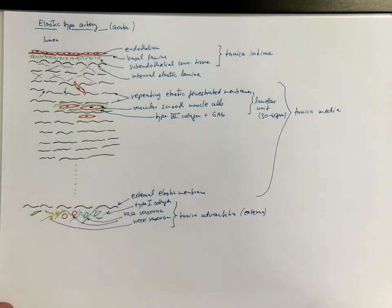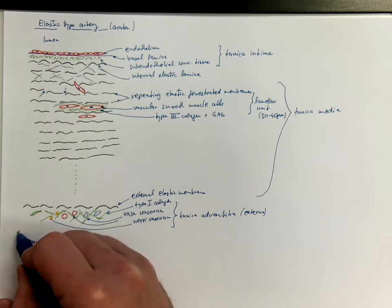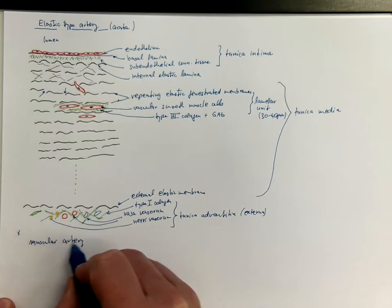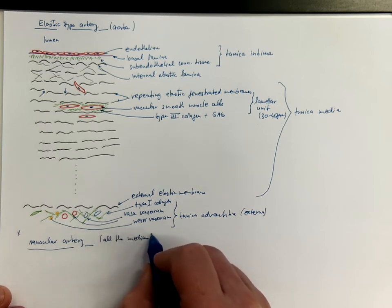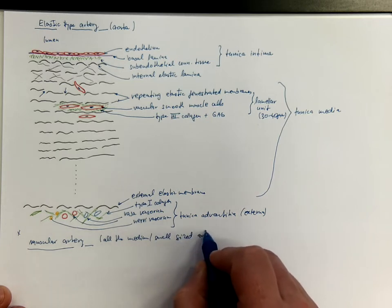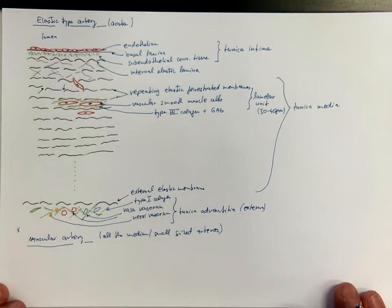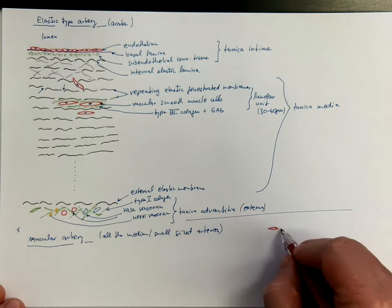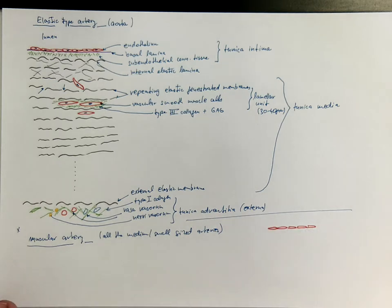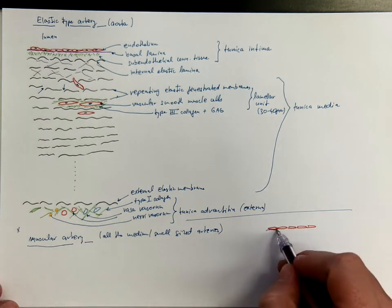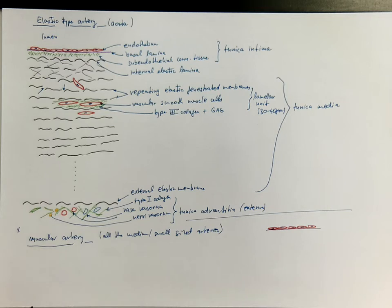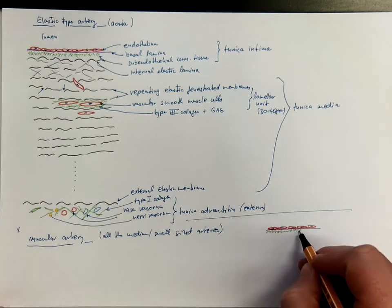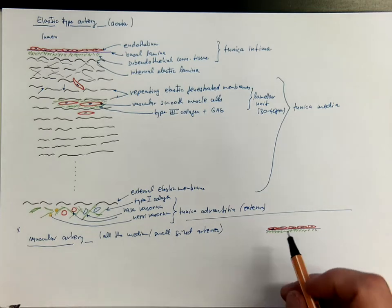Now let's compare it with the muscular arteries. That's the majority of all the medium or small sized arteries you know by name in the human body. So the muscular arteries, they have got endothelium as well, sitting on the basal lamina. We got the subendothelial connective tissue. We got the internal elastic lamina.